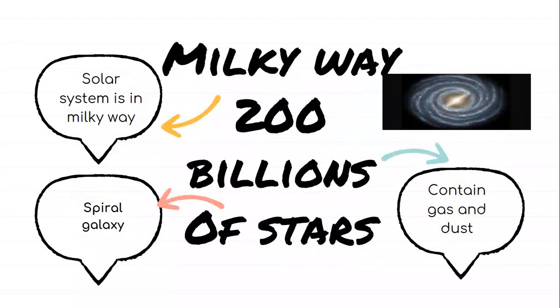Milky Way galaxy. It contains about 200 billion stars. The solar system is located in the Milky Way galaxy, and it is a spiral galaxy, and contains gases and dust.